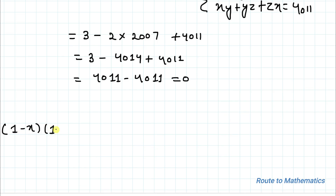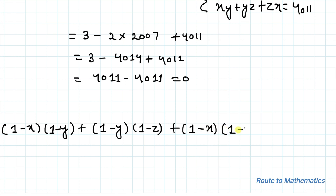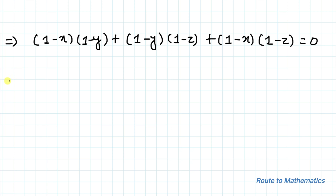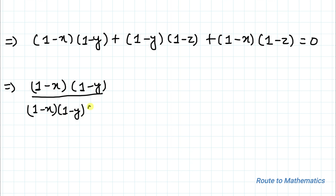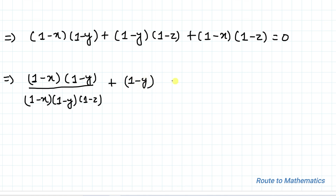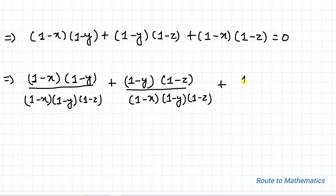So our equation becomes (1-x)(1-y) plus (1-y)(1-z) plus (1-x)(1-z) equals 0. In the next step, we divide each term by (1-x)(1-y)(1-z), so we write each product divided by the full product (1-x)(1-y)(1-z) equals 0.